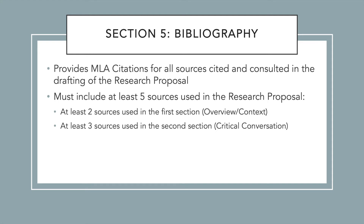In this section, you will provide MLA citations for all of the sources that you cited and consulted in the drafting of your research proposal. You must have a minimum of at least five sources used in this research proposal and therefore cited in the Bibliography — at least two sources used in the first section, the Overview and Context section, and at least three sources used in the second section, the Critical Conversation section. Certainly you're welcome to have more, but those are the minimums for this assignment.